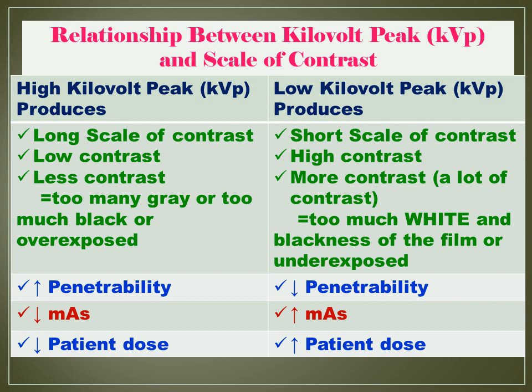MAS is responsible for the blackening of the radiograph. But high KVP produces less patient dose, which is beneficial to the patient.